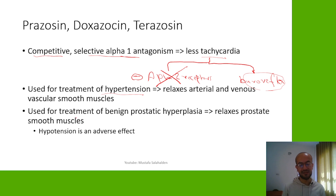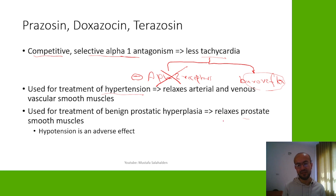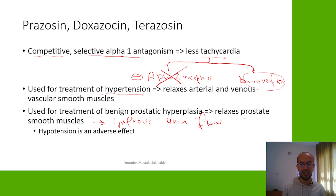They are also used in the treatment of benign prostatic hyperplasia (BPH), because they relax the prostatic smooth muscles. Since the prostate has alpha-1 receptors, blocking them produces relaxation of the prostatic smooth muscle and improves urine flow in people with BPH. However, we might get hypotension as an adverse effect in these patients.